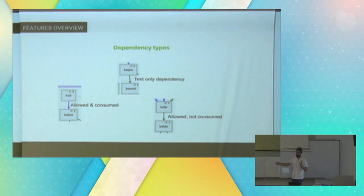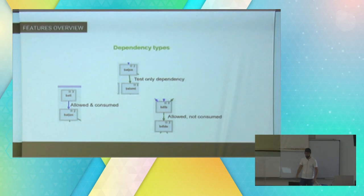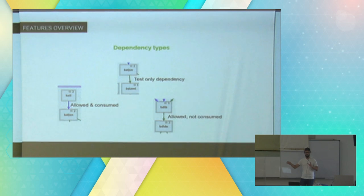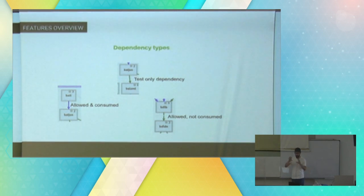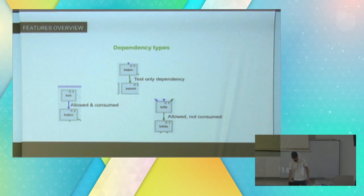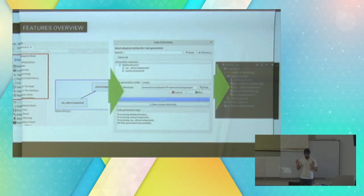Dependency types: sometimes a component depends on another component only for testing purposes — it's a dependency in your test driver, not directly in your code. You can recognize those. You can tell the software you have a set of rules where you are allowed to depend on a particular component but don't necessarily do so. The tool can help you visualize if you are allowed to depend on a subset of components. This is optional — it's just something we have.